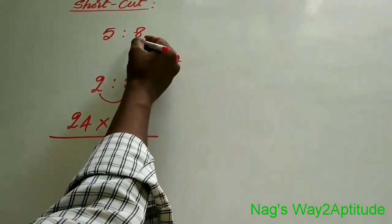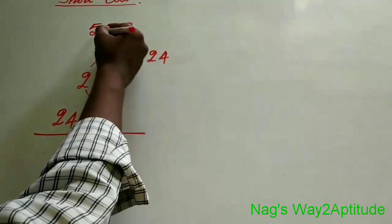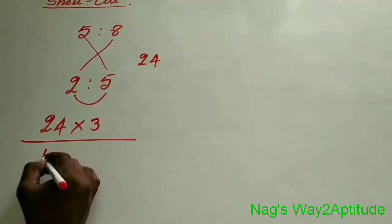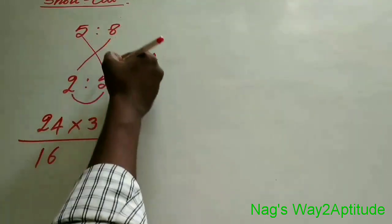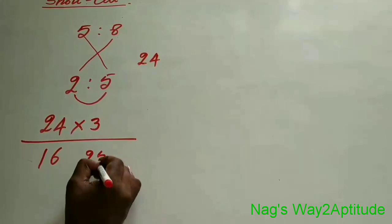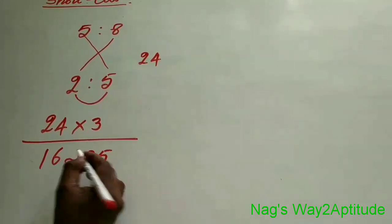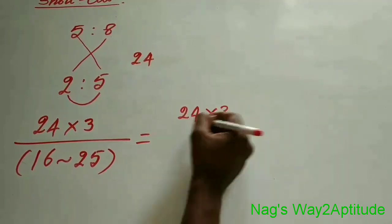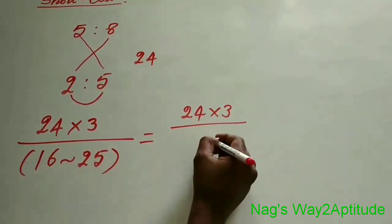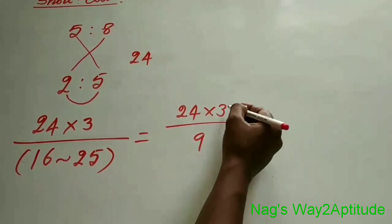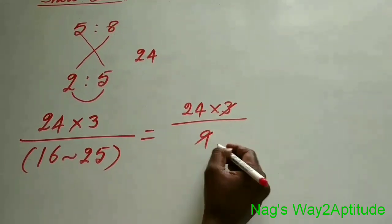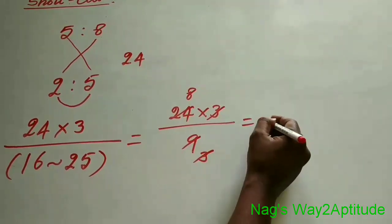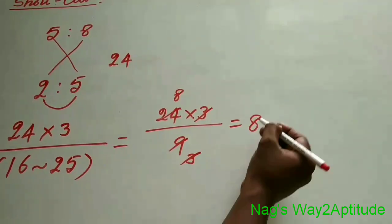Now you cross multiply these two terms. So 8 times 2 is 16, and 5 times 5 is 25. Take the difference of 16 and 25, which is 9. So we have 24 into 3 divided by 9. 3 goes into 9 three times, and 3 goes into 24 eight times. So finally we get x equals 8.